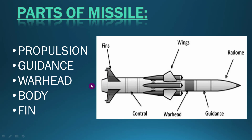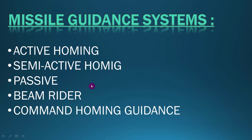There are mainly four types of missile guidance systems: active homing, semi-active homing, passive, beam rider, and command guidance. There are also navigational guidance systems, ballistic missile systems, and many more sophisticated modern systems, but here I am going to cover the more basic and commonly used guidance systems.